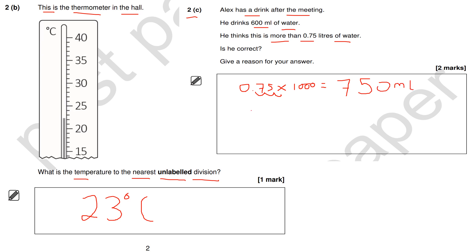Therefore, Alex is actually incorrect. Alex is wrong because 750 milliliters is greater than 600 milliliters, obviously by your place value knowledge - 0.75 liters is greater than 600 milliliters.